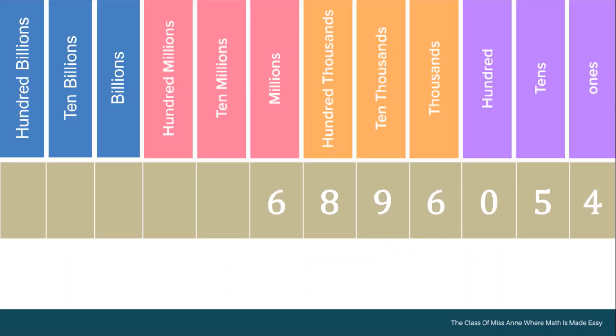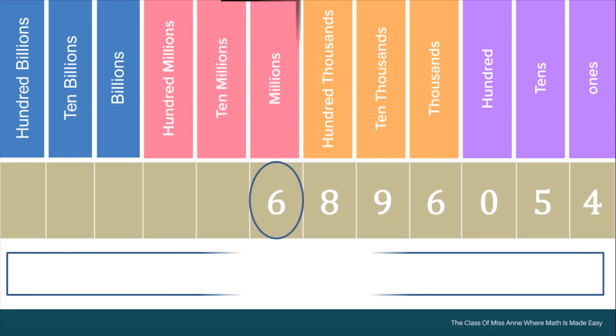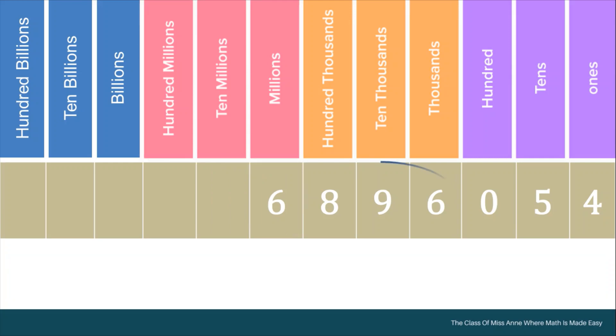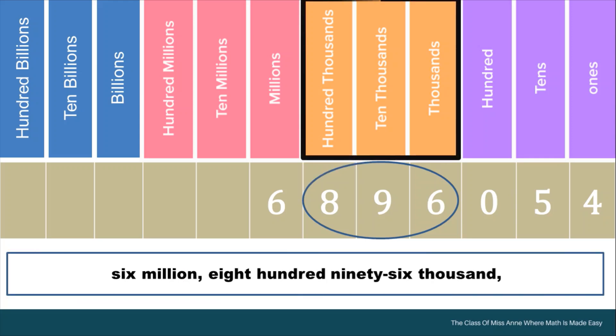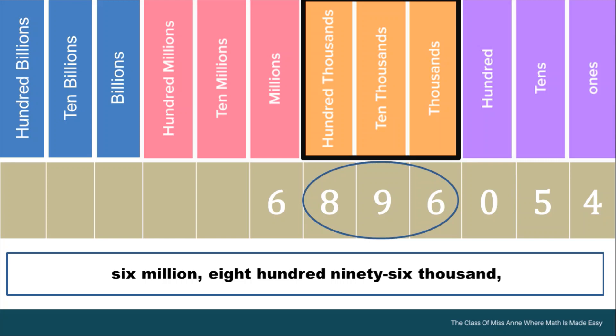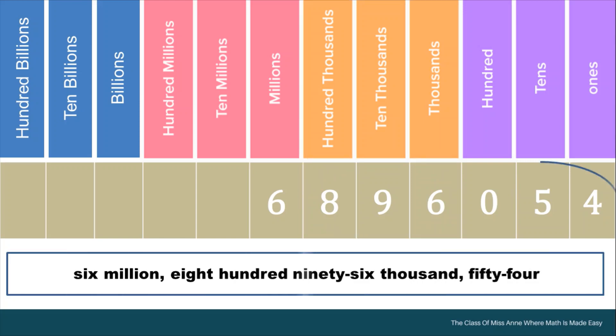Let me give you a bigger number. Here, we read 6 and mention its period. So that is 6,000,000. Then, read 896 and mention its period. So that is 896,000. And read the numbers in the ones period. So that is 54.